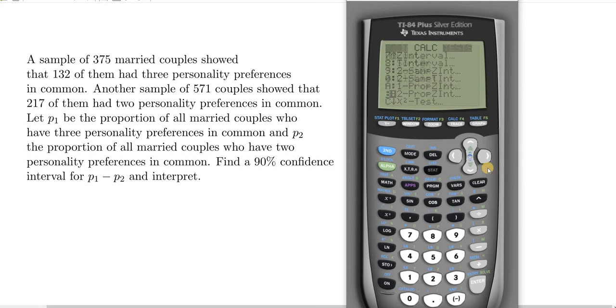So again, we go to STAT, then go over to TESTS, and navigate down until you find two proportion Z-interval. Then press ENTER.